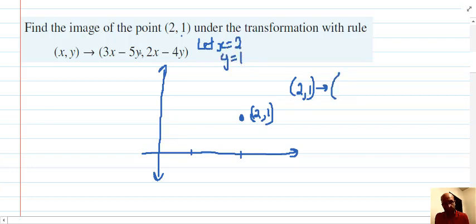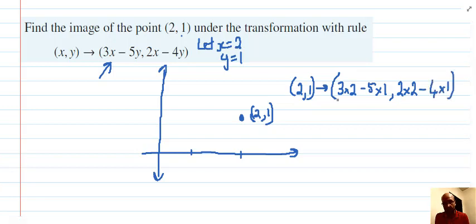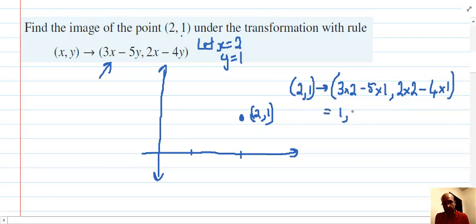So we follow our transformation instructions there. So we have 3 times 2, minus 5 times 1, comma, 2 times 2, minus 4 times 1. And that equals (1,0). So we basically transform to the point (1,0) there.